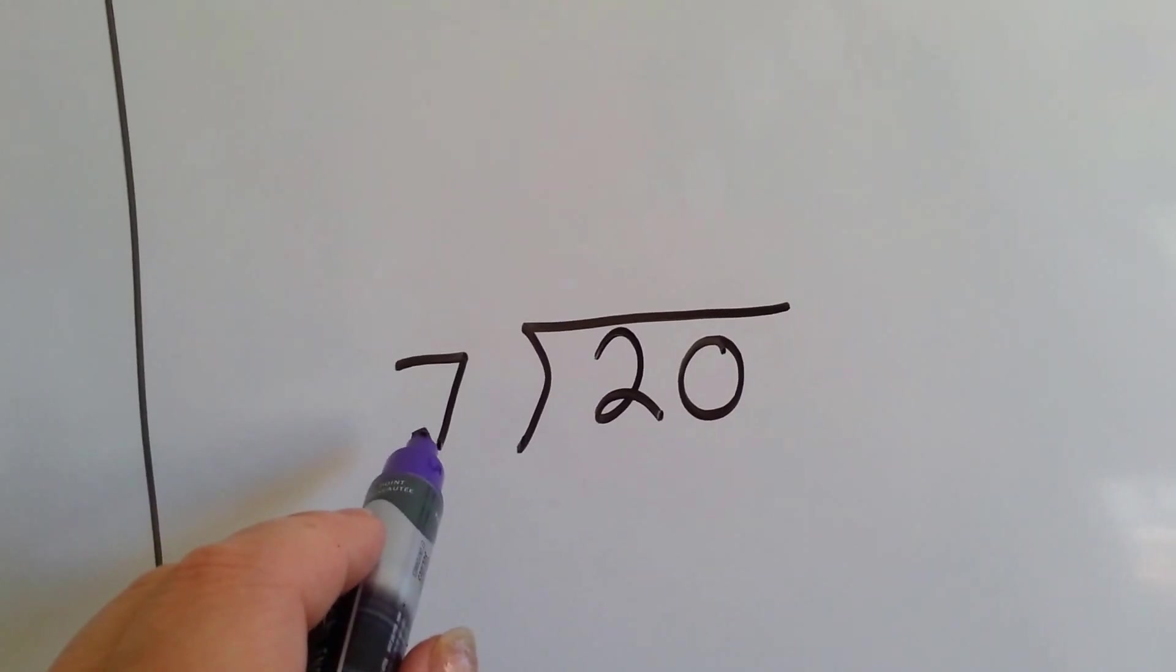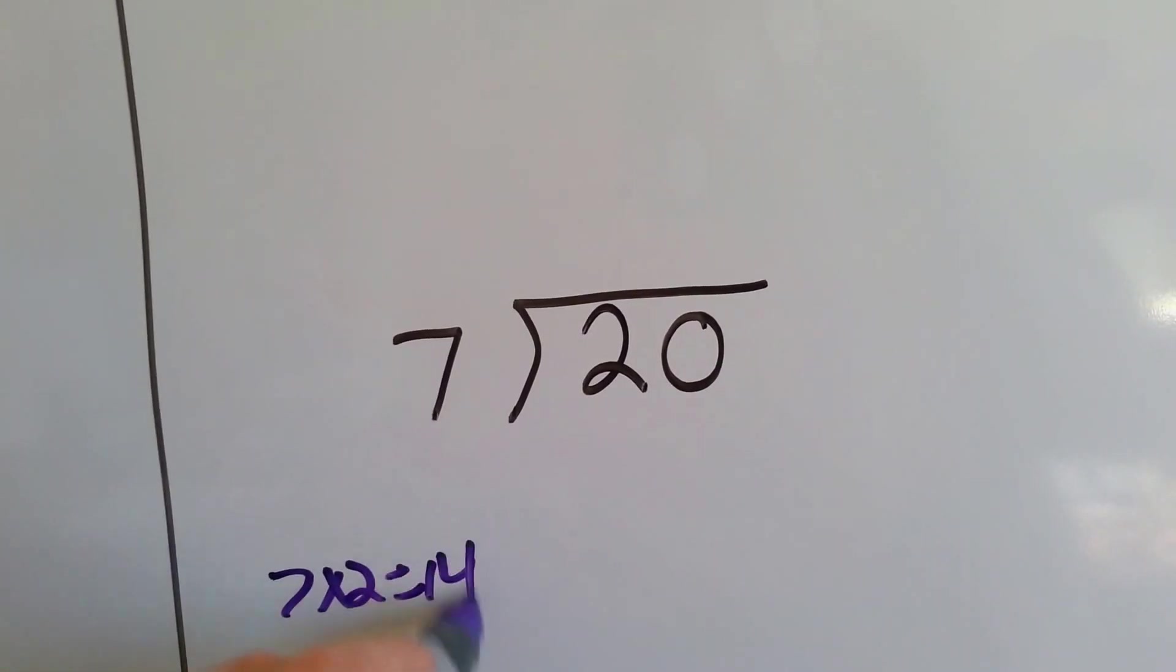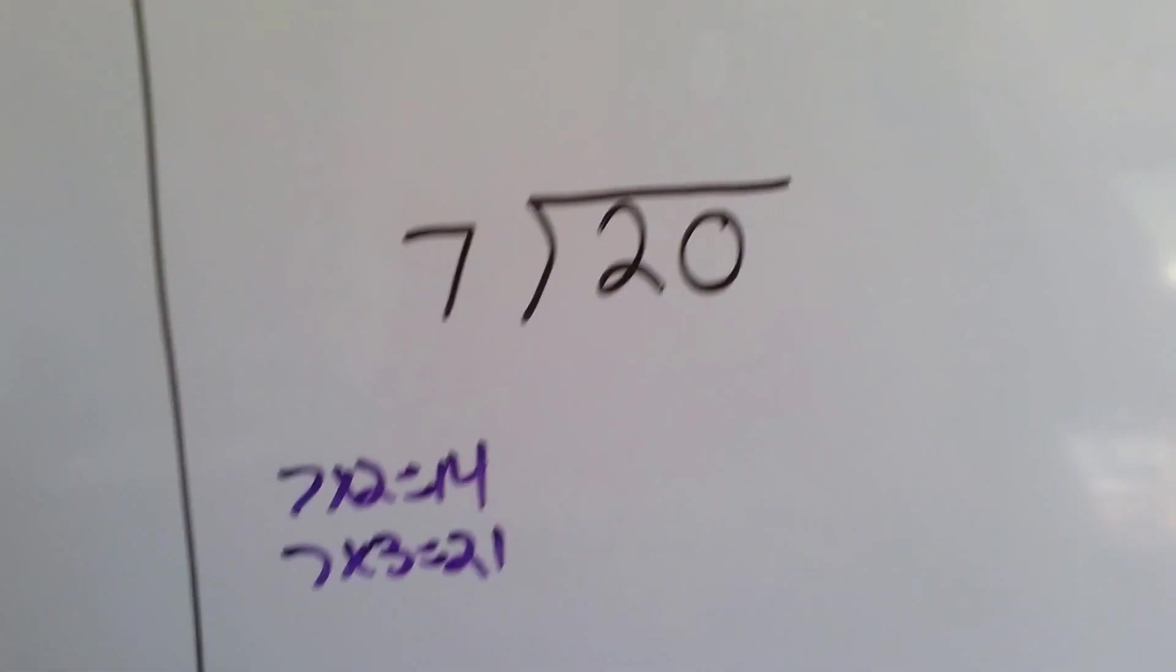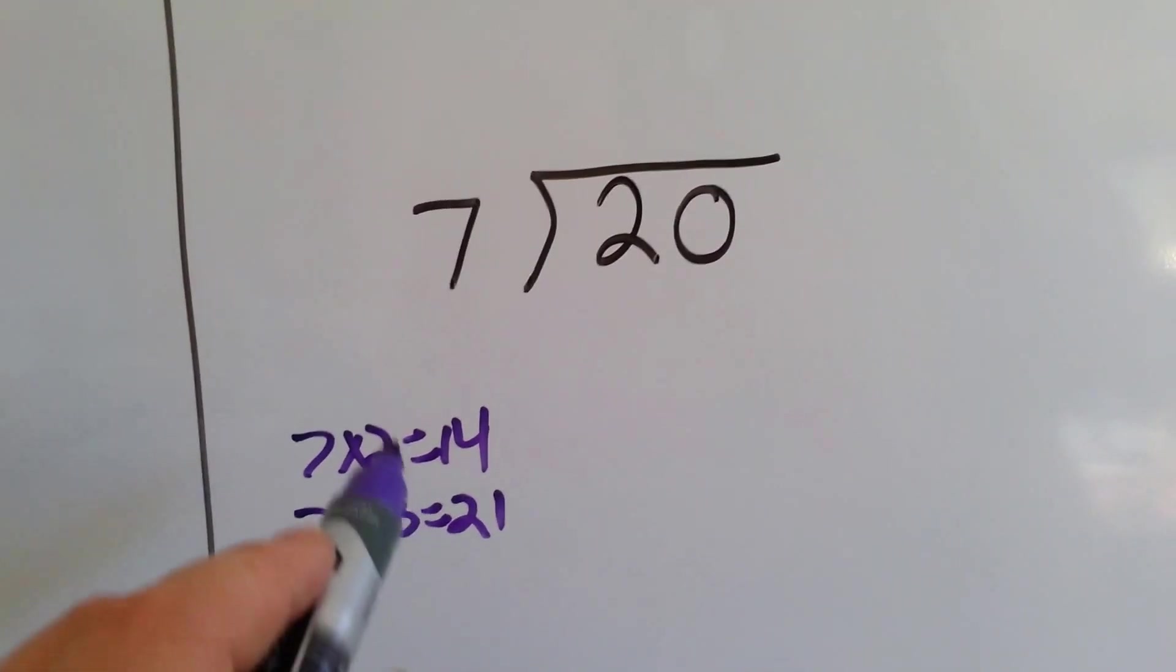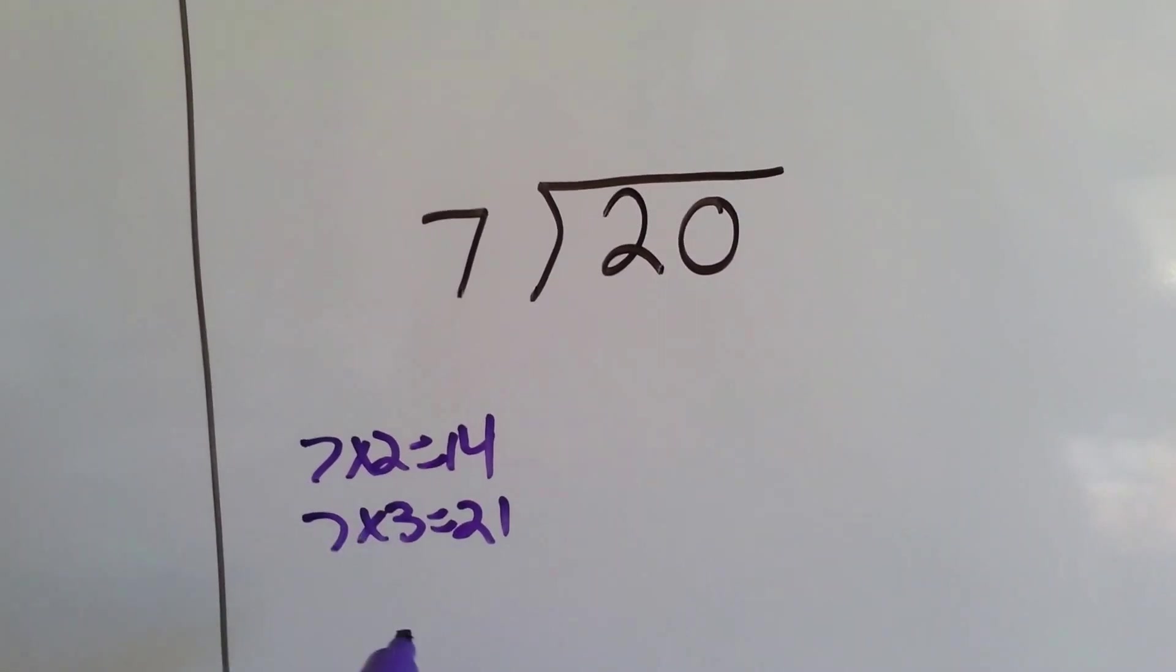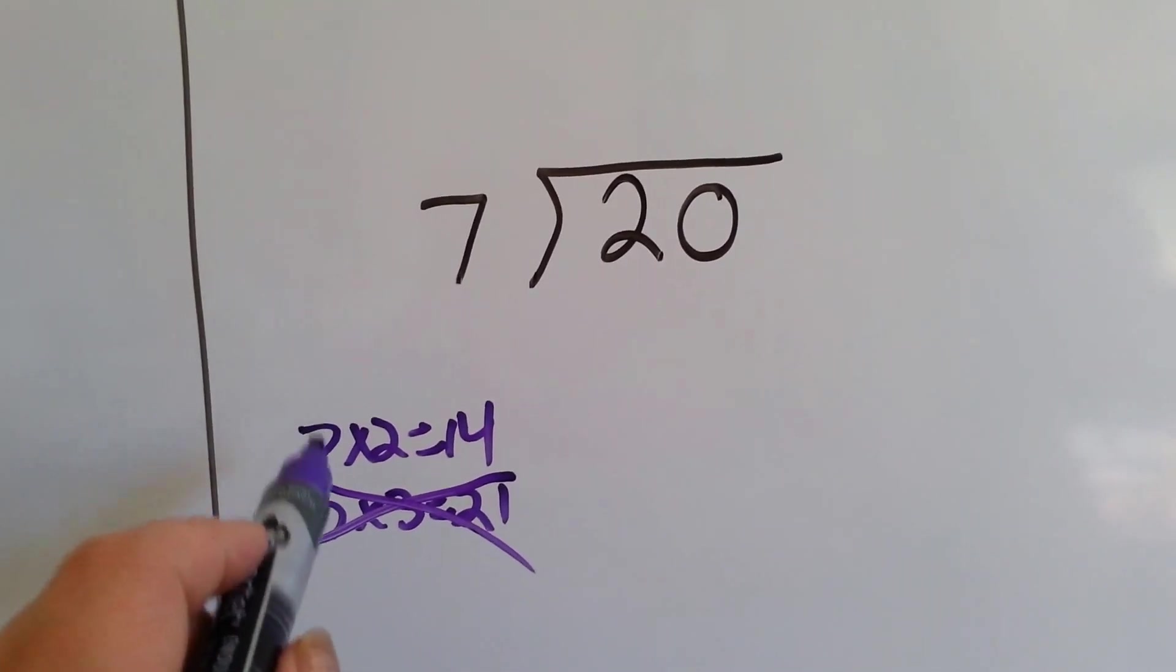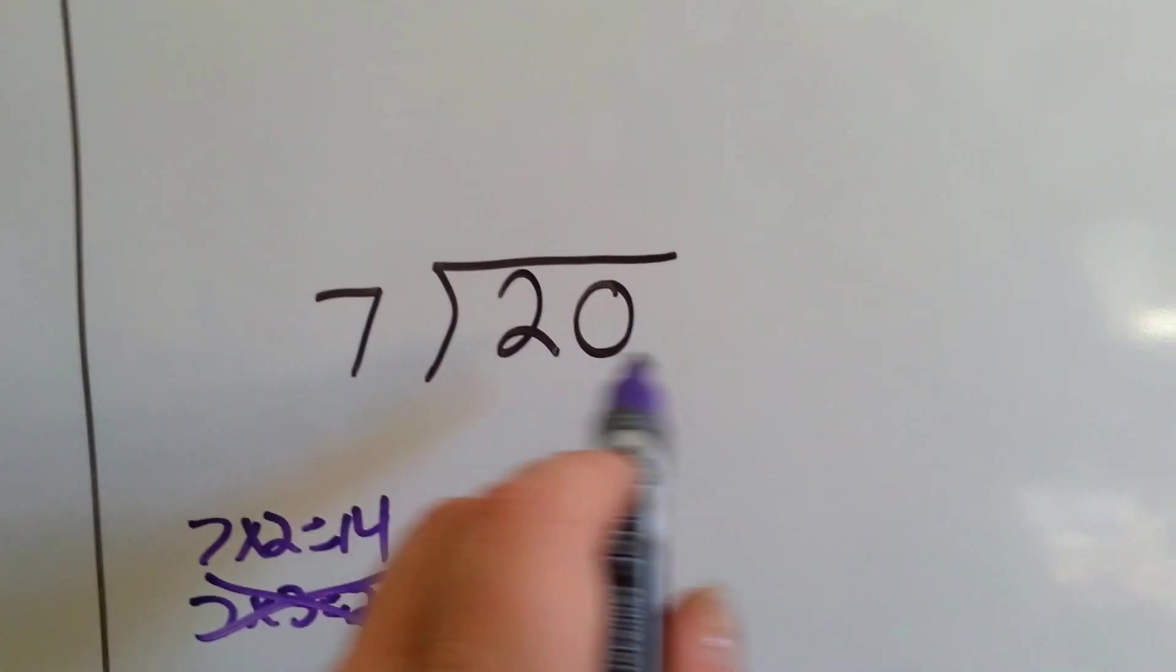Well, 7 times 2 is 14. 7 times 3 is 21. But we can't go over. You're not allowed to go over. You can only go under and have remainders. So 21 is too big. So we can't do that one.